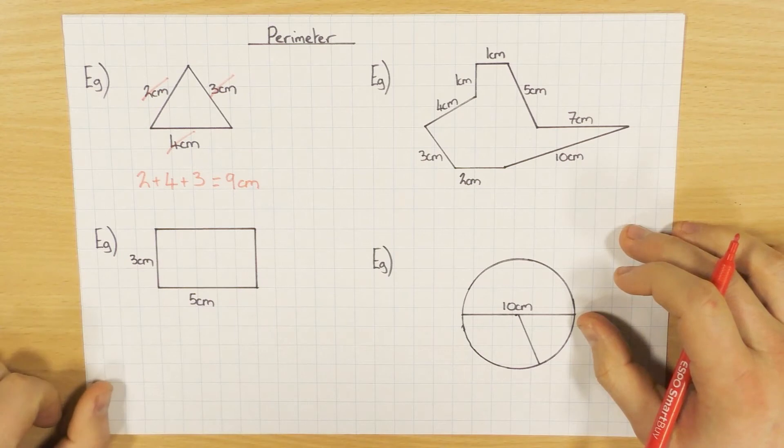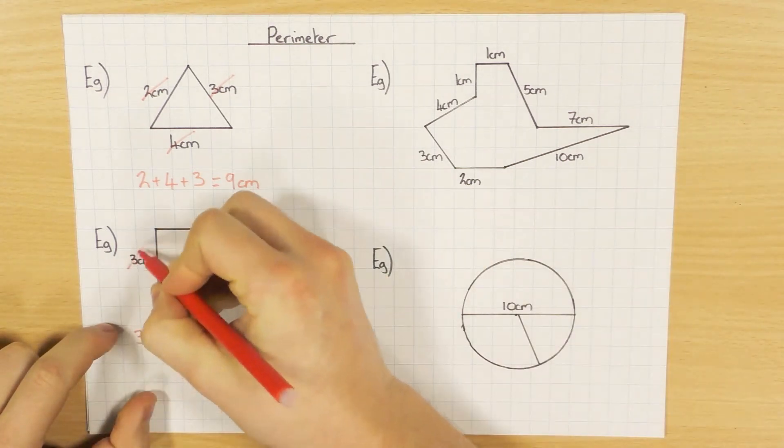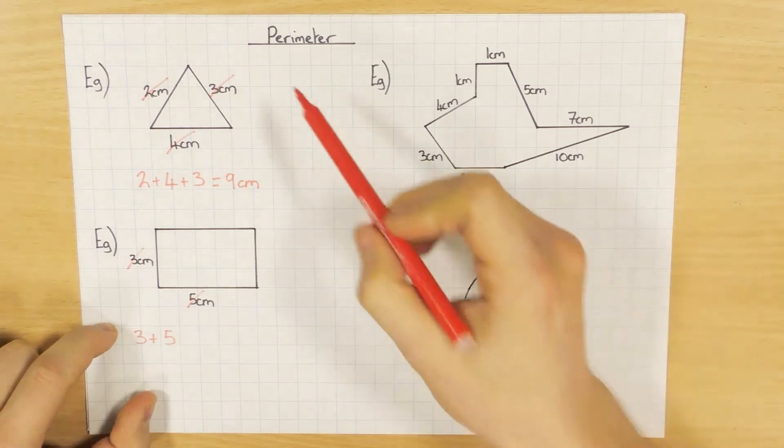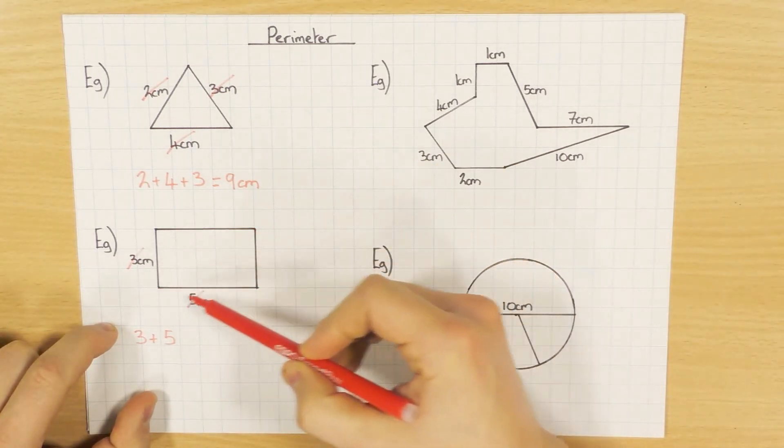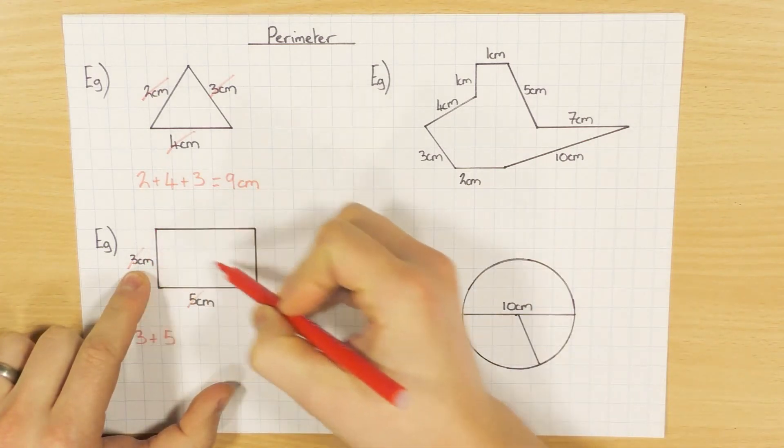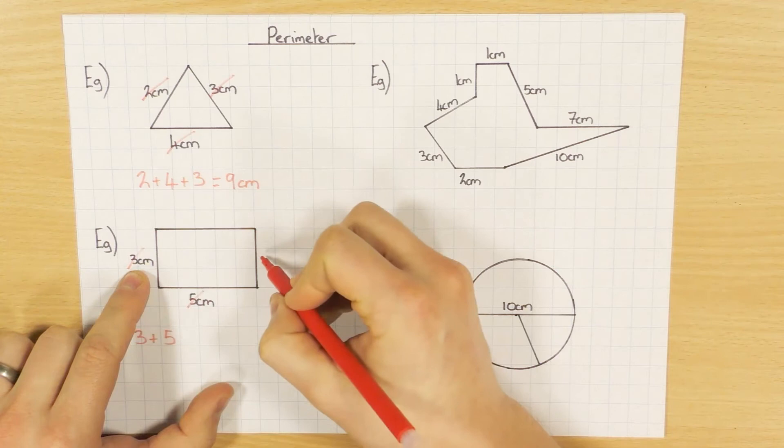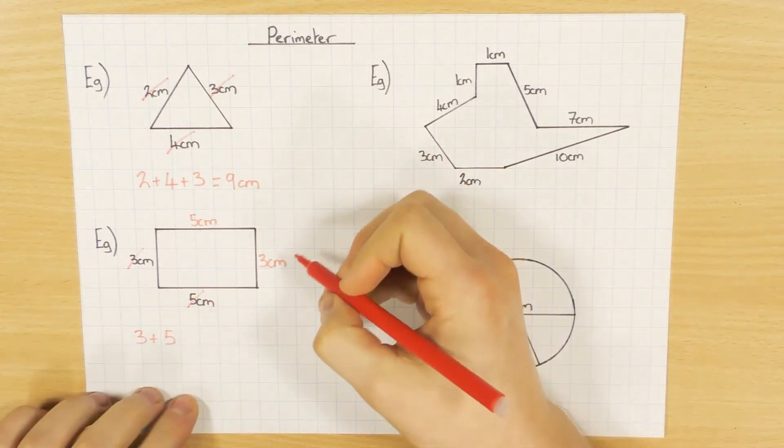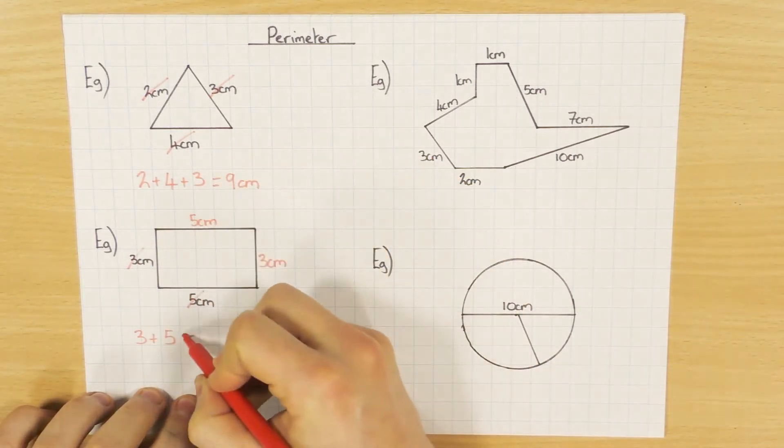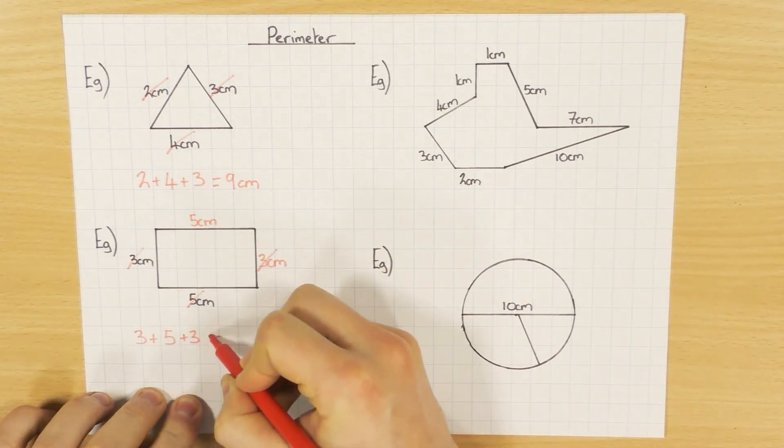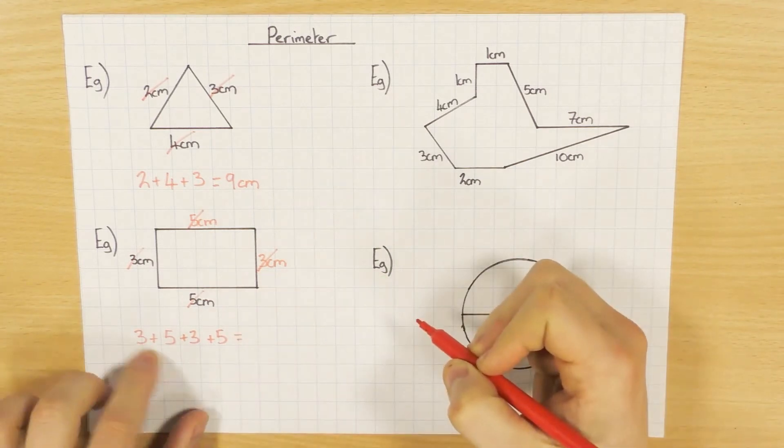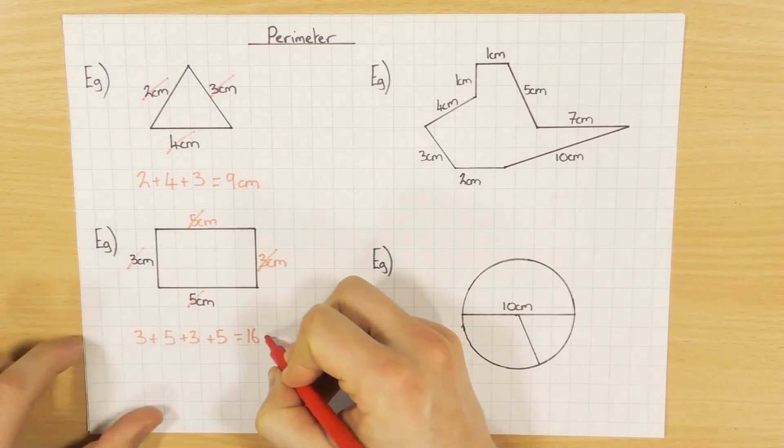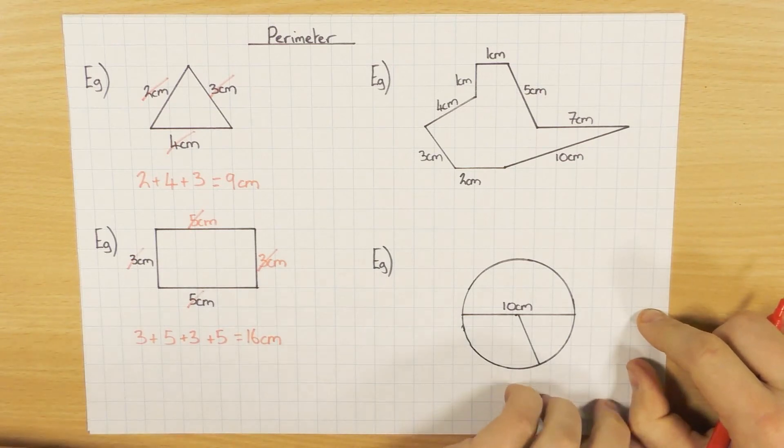In this rectangle example, people will just add 3 and 5 and say the answer is 8. But perimeter is all the way around the shape, so you must fill in the missing sides. Because it's a rectangle, this side is 3cm which means the opposite is also 3cm, and this is 5cm so that's also 5cm. Make sure you fill in all missing sides so you don't miss any when adding. So 3 add 5 is 8, add 3 is 11, add 5 is 16 centimeters.